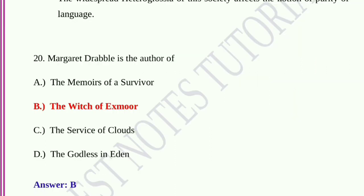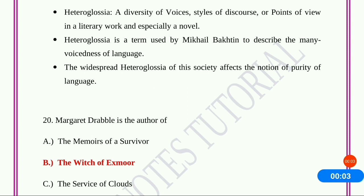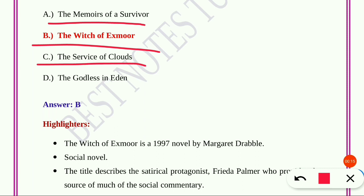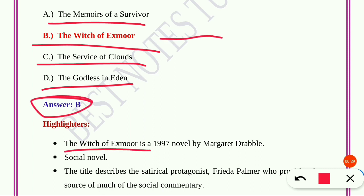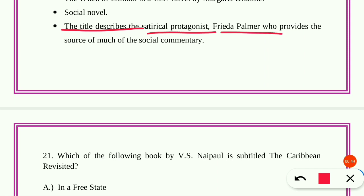Question number twenty: Margaret Drabble is the author of option A, The Memoirs of a Survivor; option B, The Witch of Exmoor; option C, The Service of Clouds; option D, The Godless in Aden. Option B, The Witch of Exmoor, is the correct answer. The Witch of Exmoor is a 1997 novel by Margaret Drabble; it is a social novel whose title describes the satirical protagonist Frieda Palmer, who provides the source of much of the social commentary.